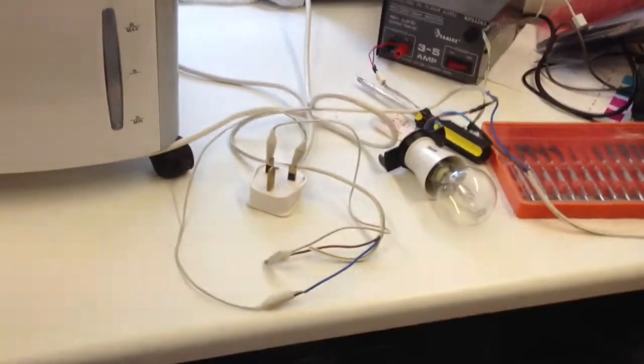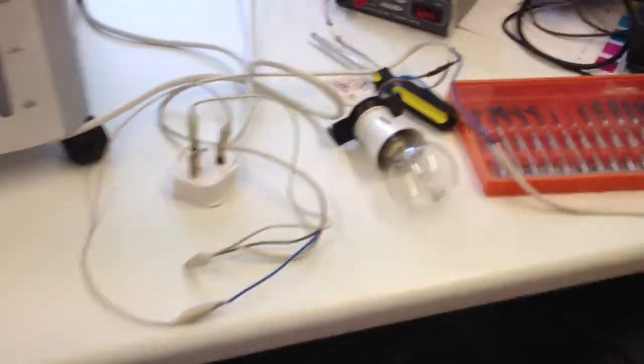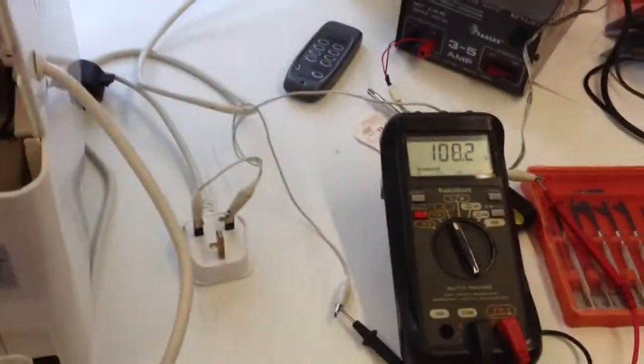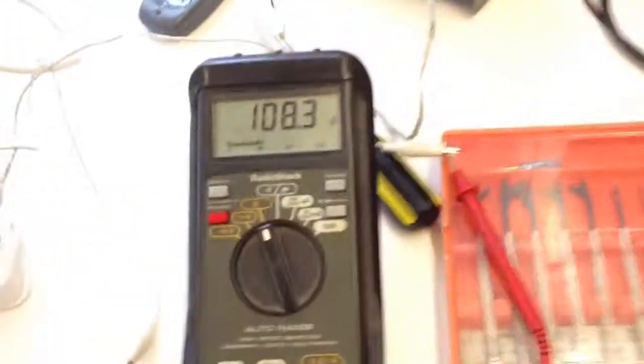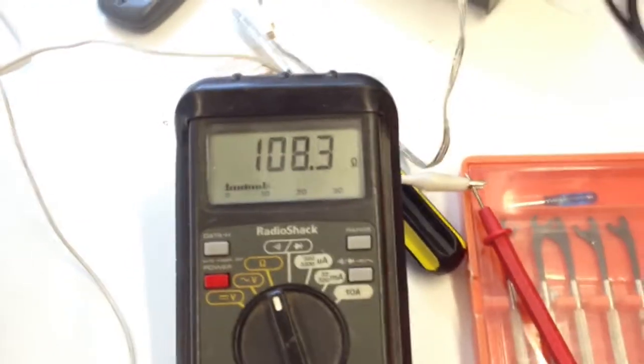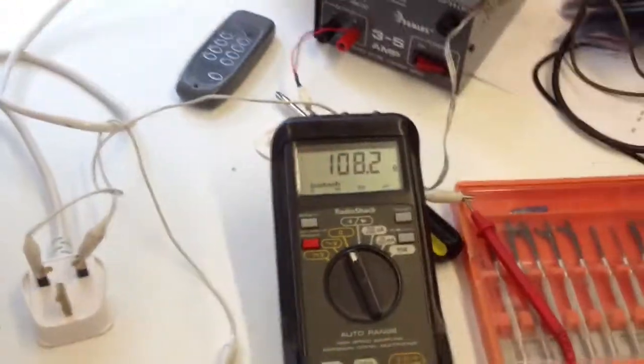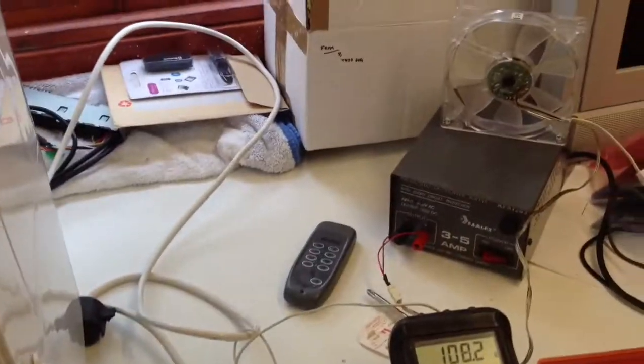Let's have a look. I've connected my meter up to it on the input on the ohms range. It's showing 108 ohms, and that shouldn't be. 108 ohms is too low.